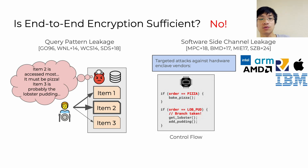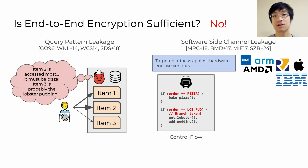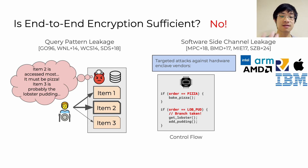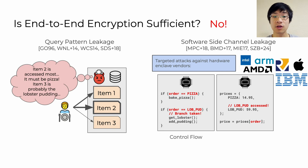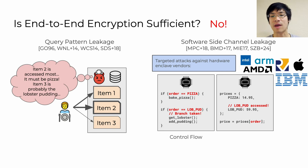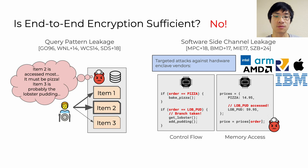Breaking this down further, we have control flow leakage, where an adversary might observe that a particular if-statement branch is taken based on the secret data. And memory access leakage, where an adversary might see that a certain memory access occurs to an array or a map that's dependent on the secret data somehow.